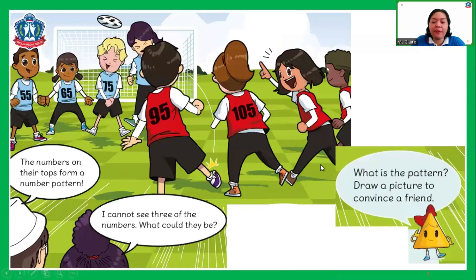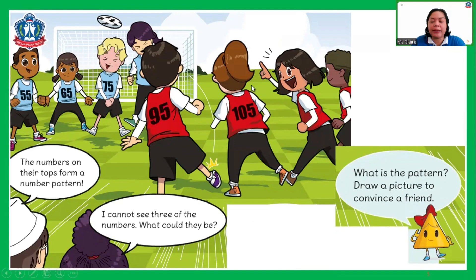Take a look here. I have some children playing, and there are numbers on their tops that form a number pattern. Three of the children's numbers we cannot see. We have 55, 65, 75, then a missing number, then 95 and 105. Can you see the pattern? What is the pattern for these numbers? You can share your answer with the class later.